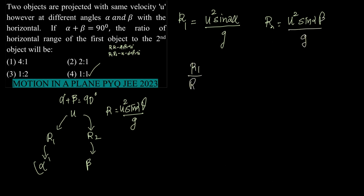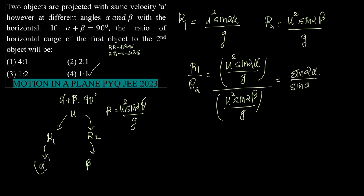Now let us find out the ratio. What is R1/R2? R1/R2 now is equal to [u²sin(2α)/g]/[u²sin(2β)/g], which is equal to... u² by g cancels, so all we get is sin(2α)/sin(2β). So R1/R2 is now equal to sin(2α)/sin(2β).